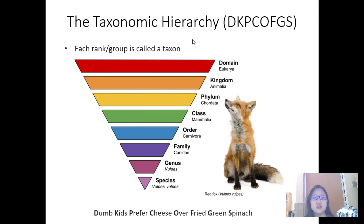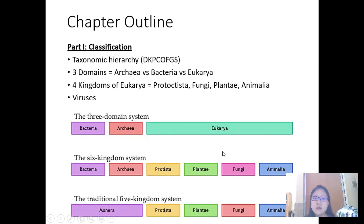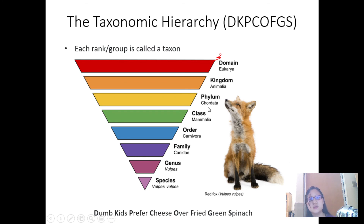Each rank or group is called a taxon. First, we take all organisms on Earth and divide them into domains — there are three different domains. Within the same domain, organisms are categorized again into different kingdoms. Eukarya is then divided into four kingdoms: the animal kingdom, the fungi kingdom, the plant kingdom, and the protists. Within the same kingdom, it can be further categorized into different phylums, then classes, order, family, genus, and species.